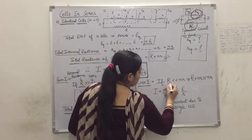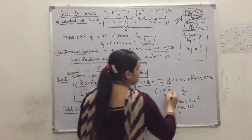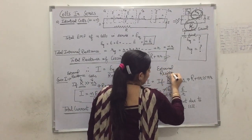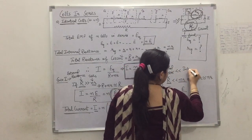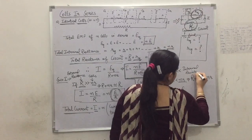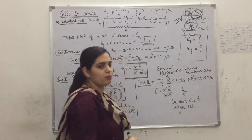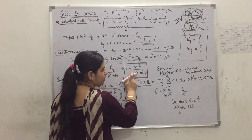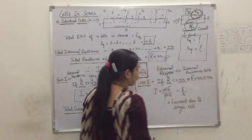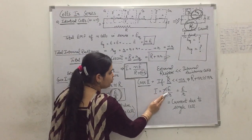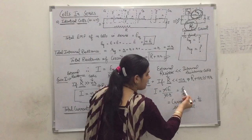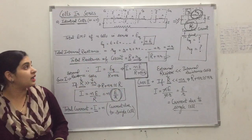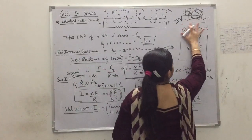Now in the second case, we suppose the external resistor capital R is very very small compared to the sum of internal resistances of all cells — that is, capital R is much less than n·r. In this case, n·r is large and capital R is small, so we can ignore capital R. Therefore capital R plus n·r is approximately equal to n·r. So the current becomes small n times E divided by n times r, and n cancels, giving current equal to E upon r.